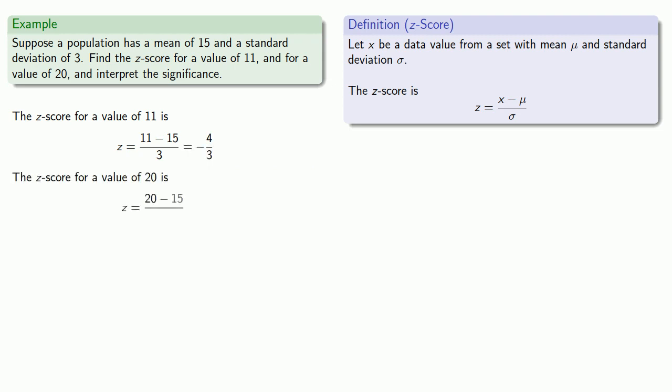The z-score for a value of 20 is going to be 20 minus the mean over the standard deviation, which is 5 thirds.